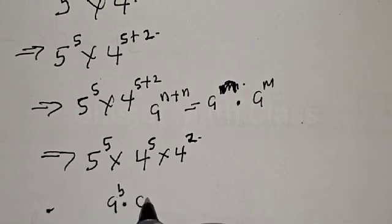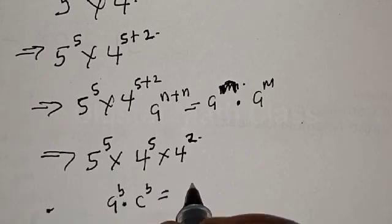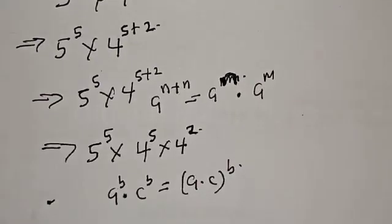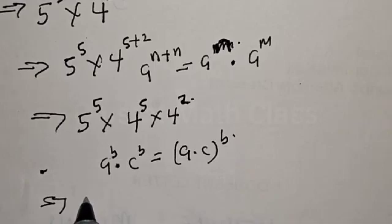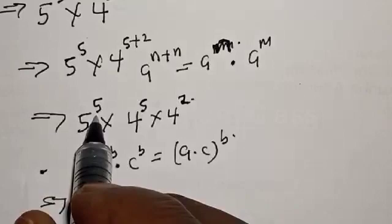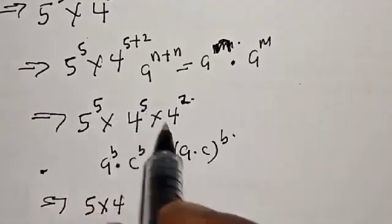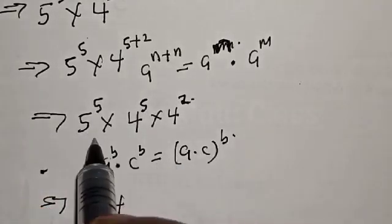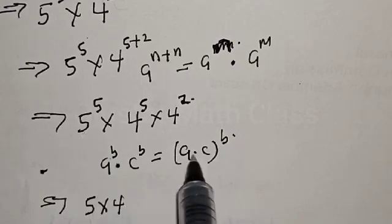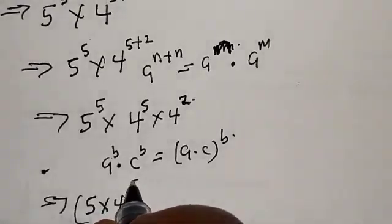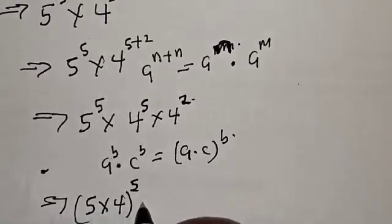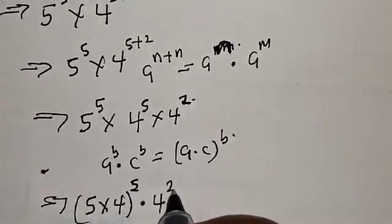Also remember that if you have a raised to power b multiplied by c raised to power b, this is the same as (a multiplied by c) raised to power b. So applying this rule, where b is 5, a is 5, and c is 4, we have 5 times 4 raised to power 5, then multiplied by 4 squared.